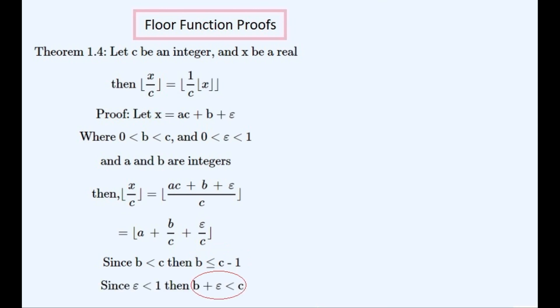Since epsilon is less than 1, when it is added to b the total is less than c. Since b is at most c minus 1, adding epsilon to it will mean that it will always be less than c. So dividing both sides of this equation by c gives us this, which gives us this expression. This is always less than 1.